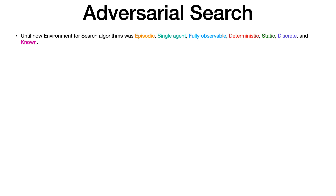Hello everyone. In the previous videos we discussed uninformed and informed search algorithms. In this video we will be discussing adversarial search algorithms. Till now we have considered our environment to follow properties like episodic, single agent, fully observable, deterministic, static, discrete, and known — each defined in the previous videos.